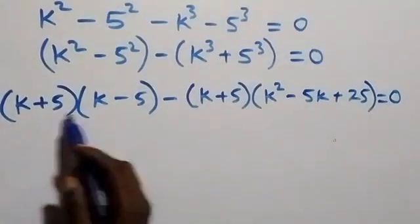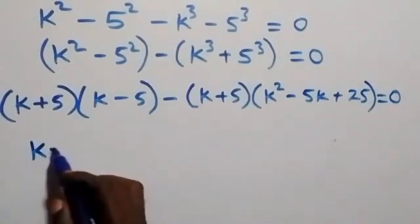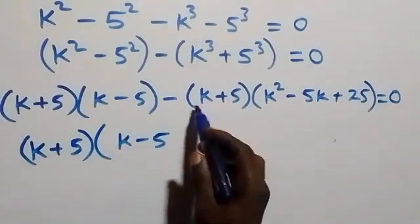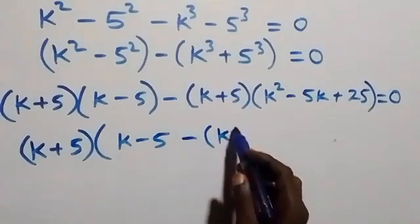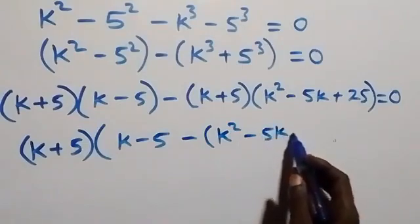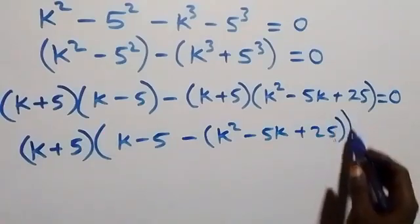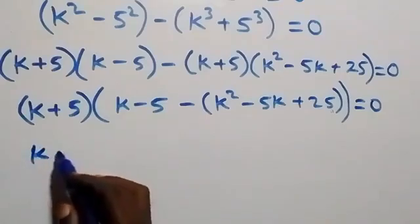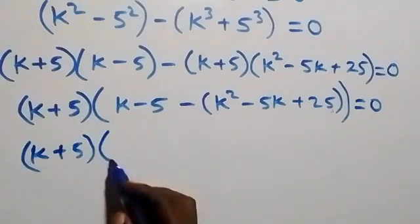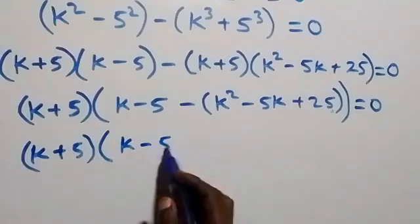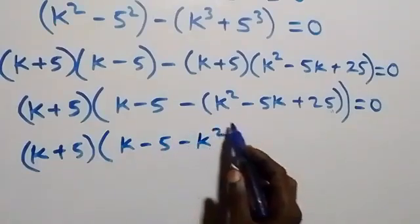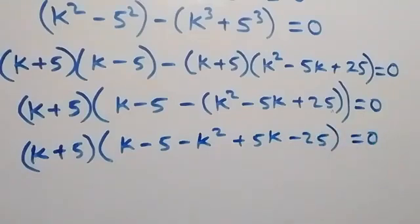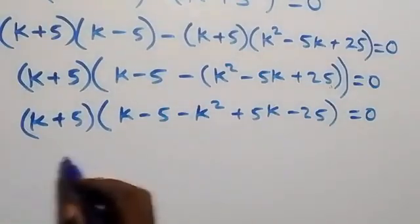Now k plus 5 is a common factor, so we factor k plus 5 out. We are left with minus x into bracket k squared minus 5k plus k plus 5, then into bracket k minus 5, minus the expanded bracket which gives minus k squared plus 5k minus 25, plus bracket equals zero.